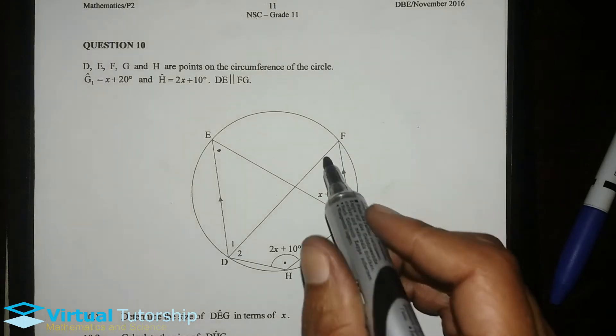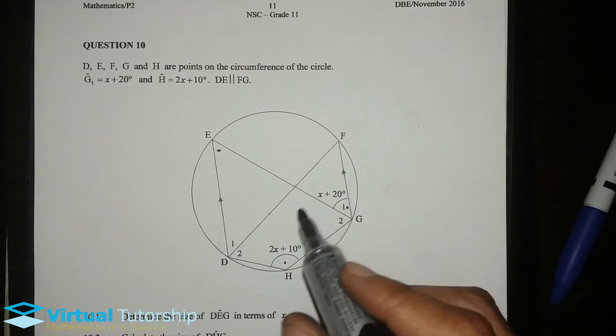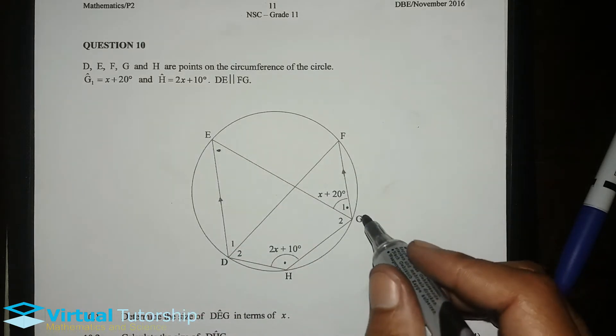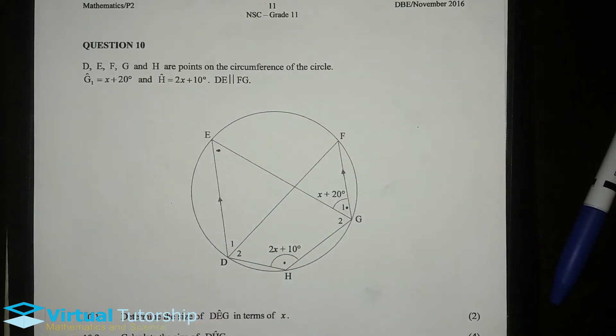We have a cyclic quad F, D, H, G. Another cyclic quad, we have D, E, G, H. So, we have cyclic quads. So, any theorem associated with cyclic quad, right? I'm going to use those.